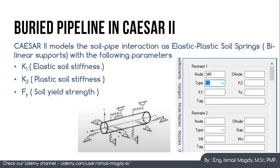These springs can be manually inserted using the type of support set to Y2, X2, or Z2 — instead of just Y, X, or Z support — then inserting the values of K1, K2, and FY, where K1 is the elastic soil stiffness, K2 is the plastic soil stiffness, and FY is the soil yield strength.